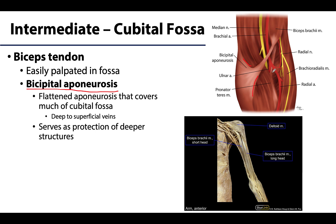In an actual dissection you can see the bicipital aponeurosis extending over the entire region. Here is the biceps brachii muscle belly, the tendon descending into the region, and the bicipital aponeurosis — that flattened portion of tendon — expanding over this area.